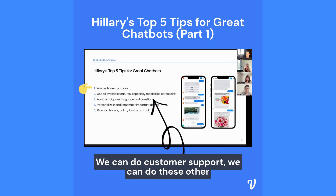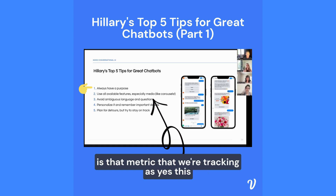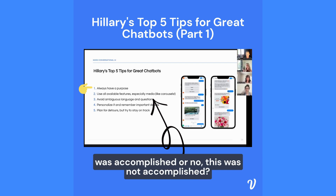We can do customer support, we can do these other things, but we want a person to be able to place an order. And them placing an order is the metric that we're tracking — yes, this was accomplished, or no, this was not accomplished.